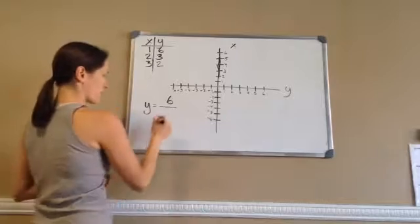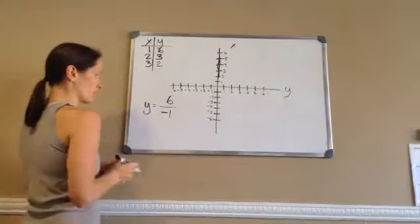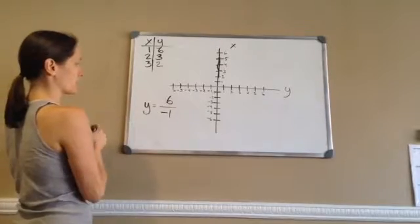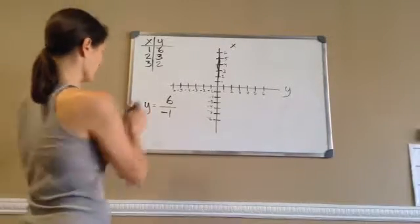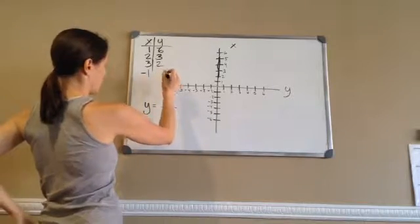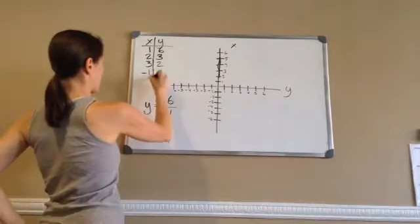All right, let's do some negative numbers. If x was negative 1, then y is what? It's going to be 6. Actually, it's going to be negative 6.